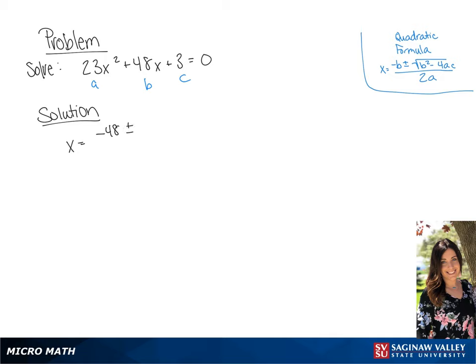So we have x equals negative 48 plus or minus the square root of 2,304 minus 276 all over 46.